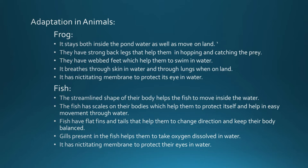The frog breathes through its skin in water and through lungs when on land. It has a nictitating membrane to protect its eyes in water instead of an eyelid. In fish, they have a streamlined shape so they can move easily inside the water. Fish have scales on their bodies which help protect them and aid easy movement. Fish have flat fins and tails that help them change direction and keep their body balanced. Fish have gills which help them take in oxygen dissolved in water, and they also have a nictitating membrane to protect their eyes.